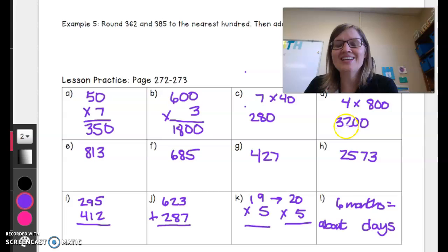Now they want you to round to the nearest hundred. So I'm looking at this, 8 is in the hundreds place, so we look next door. 1 means that I'm going to round down to 800.